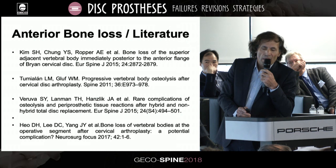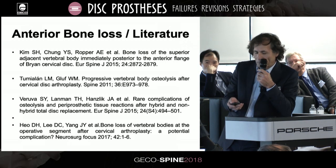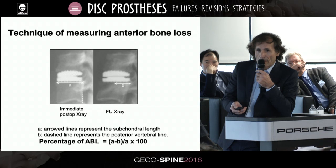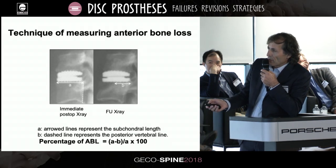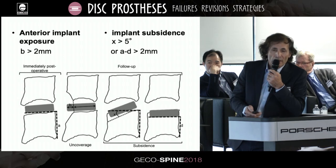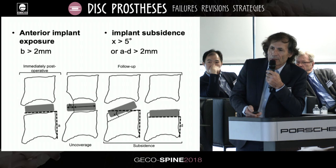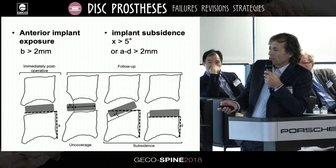60% of ABL was found in a series of 48 Baguera arthroplasties. Here is a technique for measuring anterior bone loss immediately, anteriorly, posteriorly, and at follow-up. Implant uncoverage is defined as more than 2 mm of implant exposure. Implant subsidence is defined as more than 5 degrees of caudal change or 2 mm of height loss.